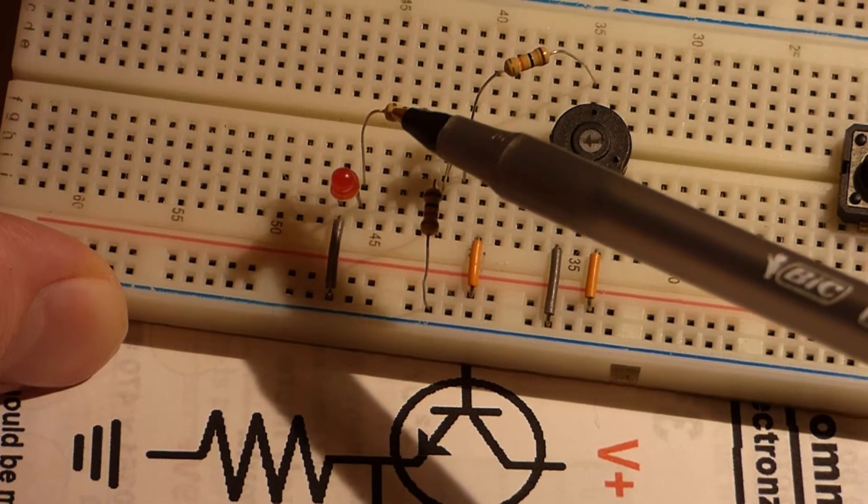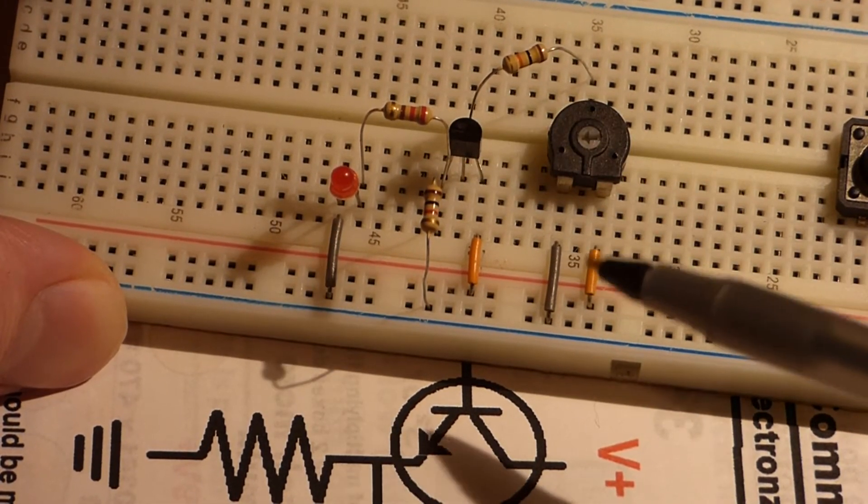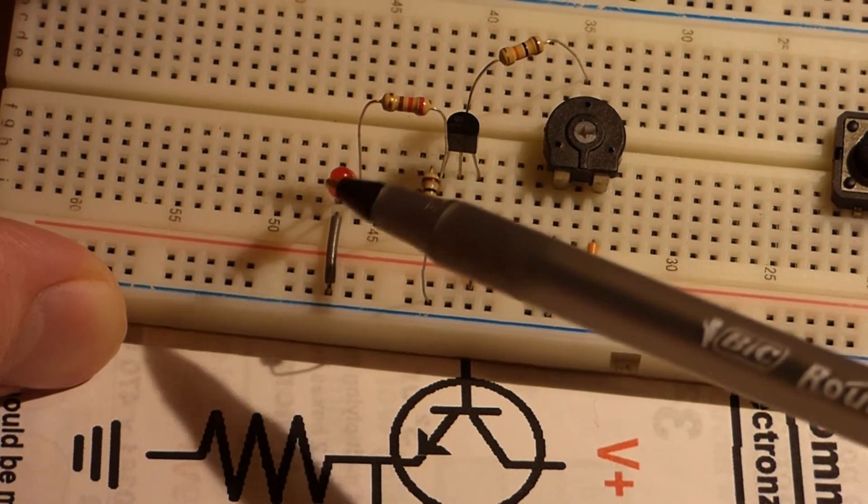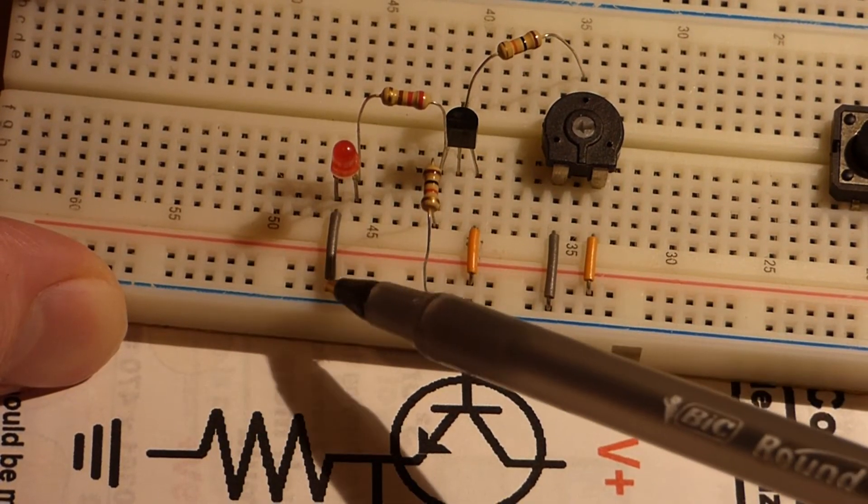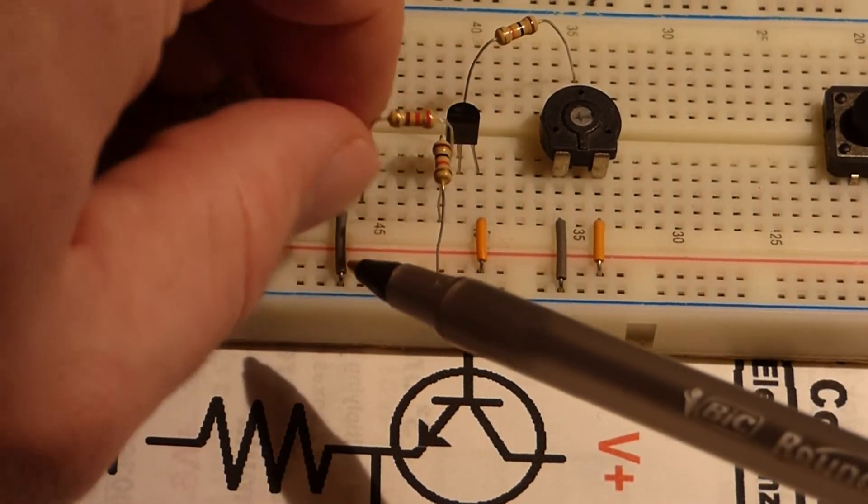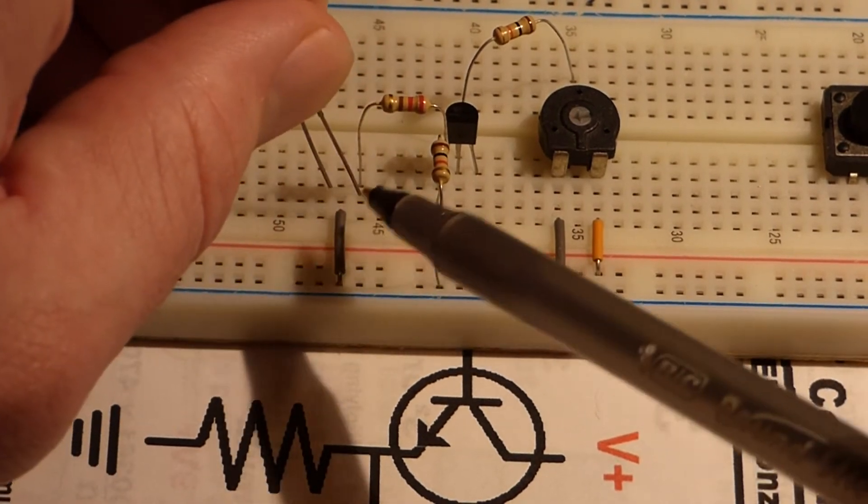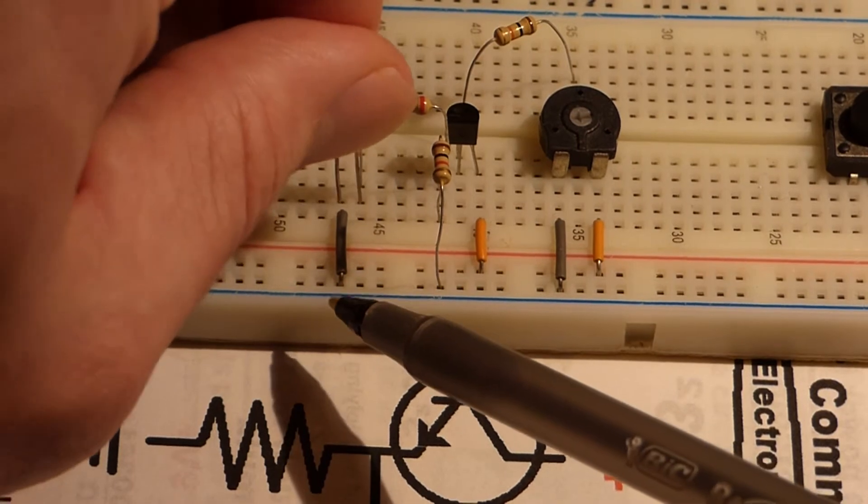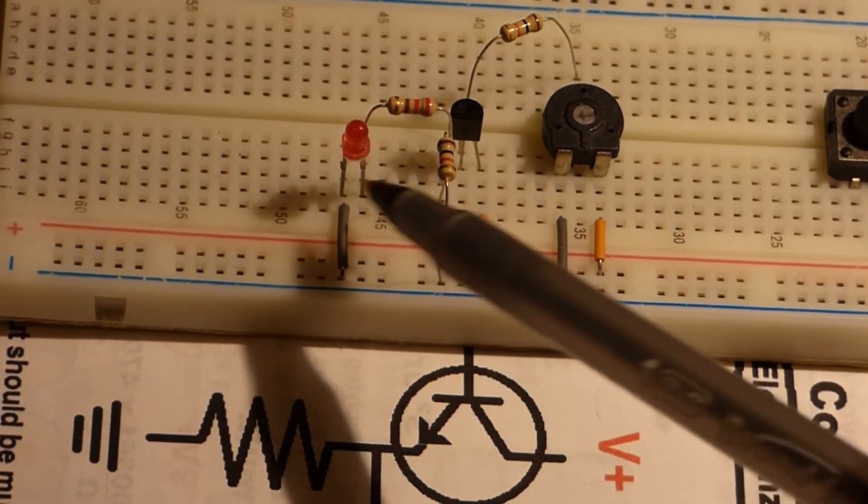It's a protective resistor, 220 ohms to protect from the 5 volt power supply and an LED which comes to ground. Long lead of the LED of course towards the positive side of the circuit. Short lead the cathode towards negative. The long lead is the anode.